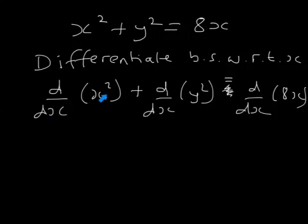d by dx of x squared, that's easy, that's 2x. And then over here, d by dx of 8x, that's easy, that's just 8. But this bit isn't quite so straightforward.